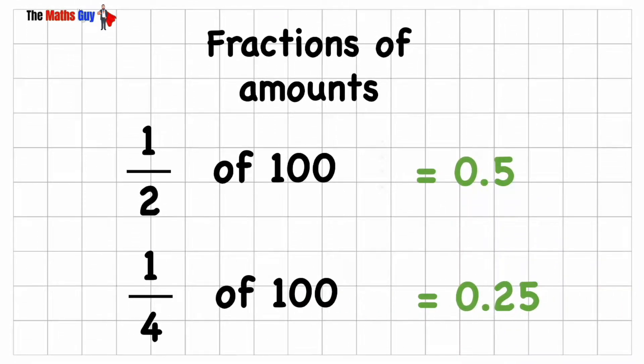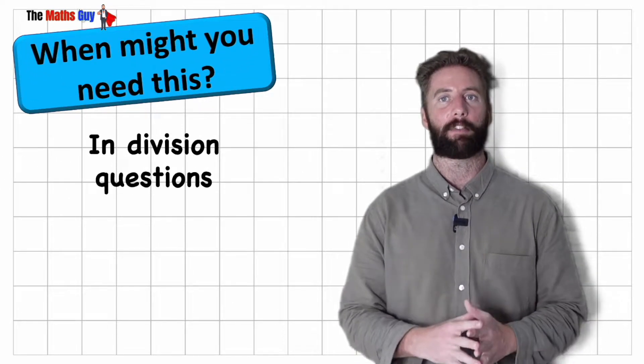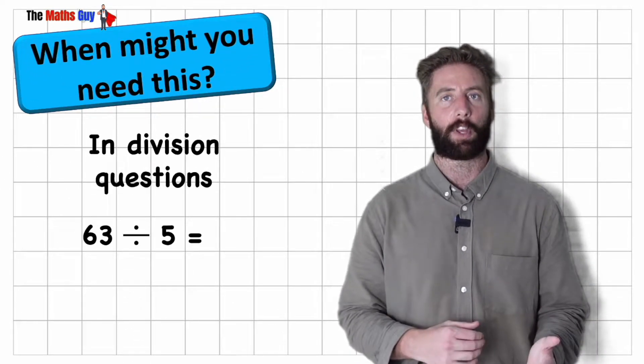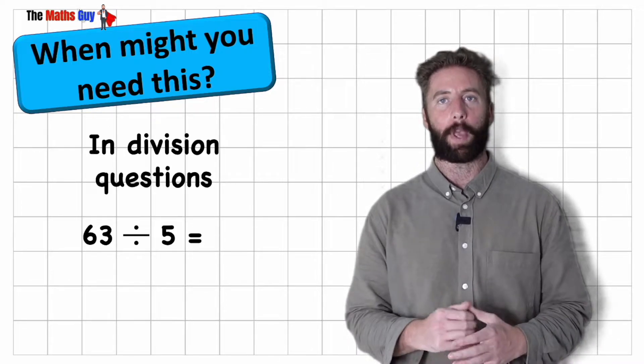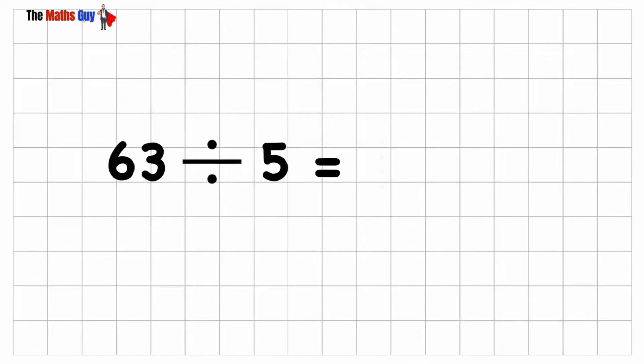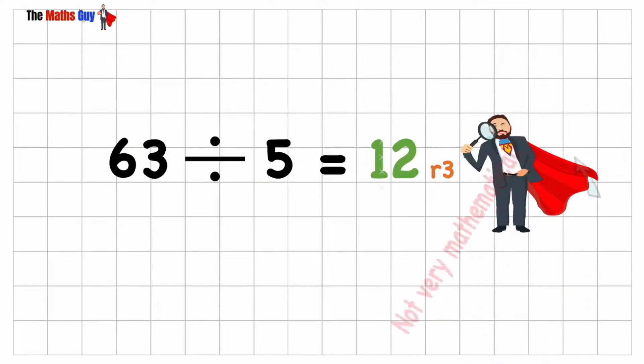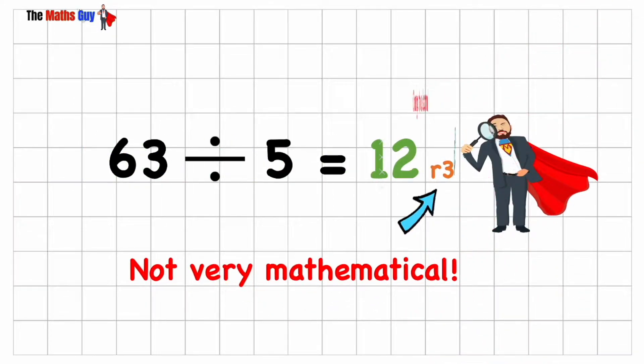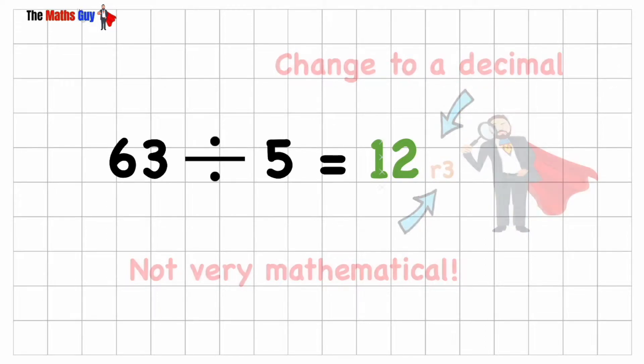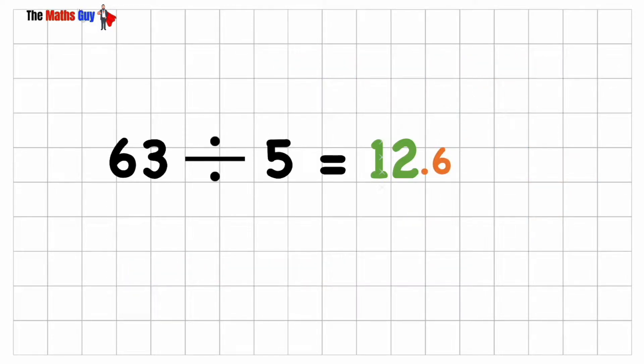The other example is in division. We might see when we have a division question like 63 divided by 5, that we end up with an answer saying 12 remainder 3. Well remainder 3 isn't very mathematical. We want to try and change it into a decimal. Therefore we're going to need to understand how to convert from fractions to decimals there as well.